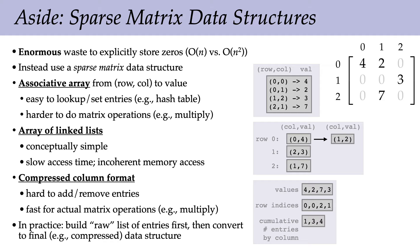For this class, you won't have to implement any of this — it's handled by the linear algebra library. But it's really important to understand what's going on under the hood so you know what choices make things fast or slow. In particular, if you implement numerical code and it's horribly slow, always ask yourself: did I use a sparse matrix data structure or a dense one? This makes an asymptotic difference in the cost of your algorithm.